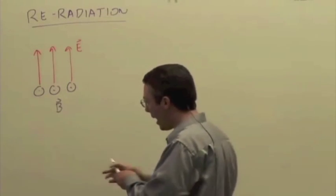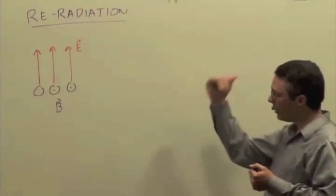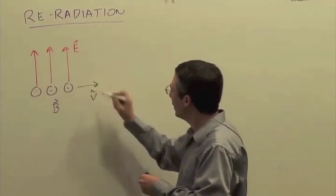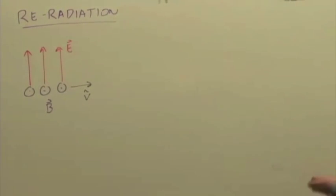and we'll say B is pointing outward. From the right-hand rule here, we know this pulse is traveling in that direction, positive X direction.